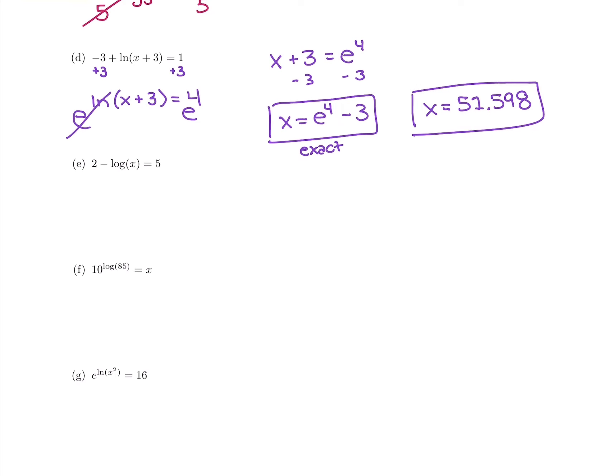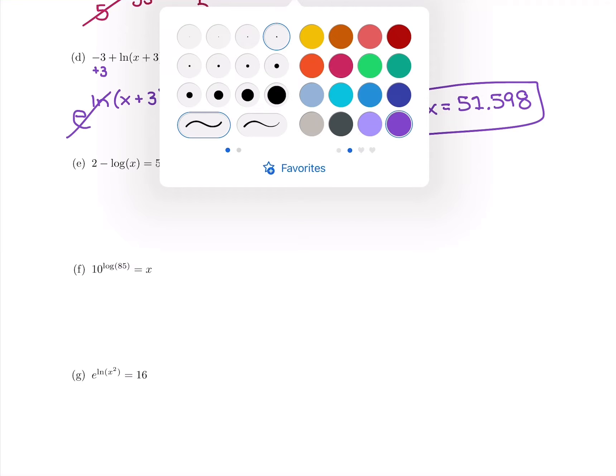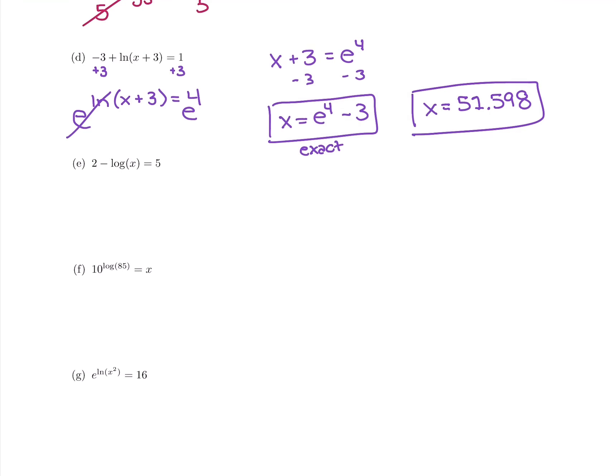We're going to continue down with the next one. I want to get the log on one side by itself. So I have 2 minus the log of x. So I'm going to subtract 2. That's going to give me negative log of x equals 5 minus 2 is 3.